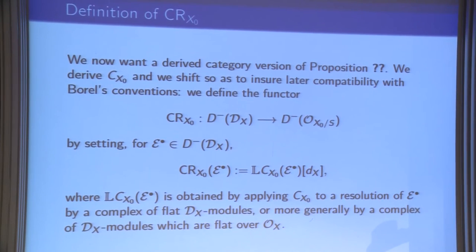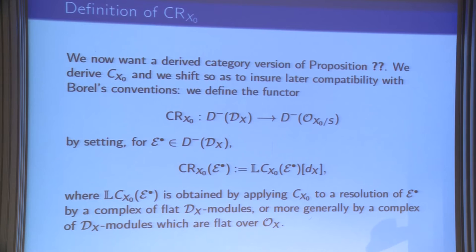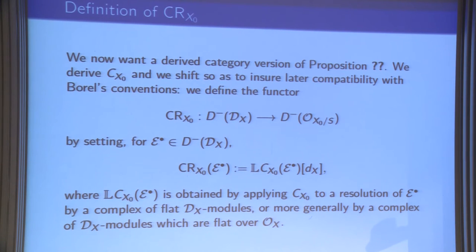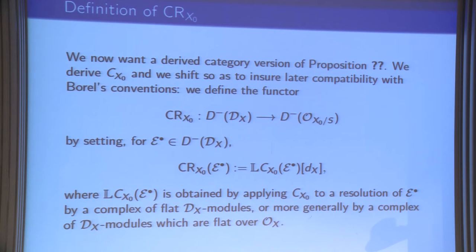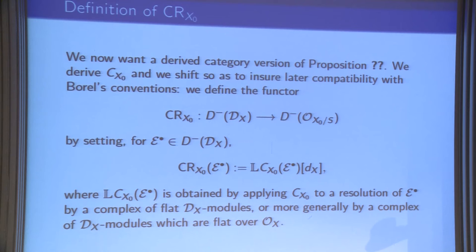I want the derived category version. I derive C_{X_0} and shift to ensure compatibility with D-module theory conventions. I denote by CR_{X_0} the functor from D^−(D_X) to D^−(O_{X_0/S}), obtained by deriving C_{X_0} — that is, replacing any complex of D-modules by a flat resolution, specifically something which is a resolution by modules flat over O_X — and then shifting by d_X.